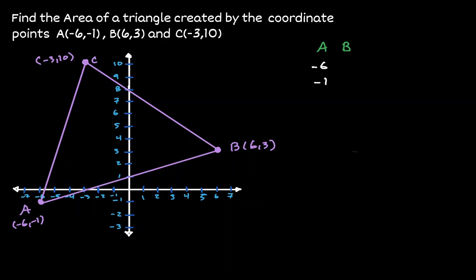Underneath B, we're going to place the x value, which is 6, and then the y value, which is 3. And then from B, let's move on to the next coordinate point, which is going to be C, when we're going counterclockwise. And let's list the x value with -3 and the y value, which is 10.